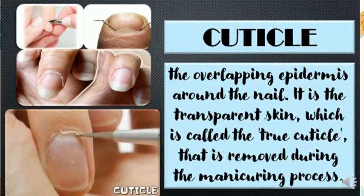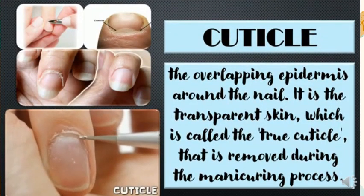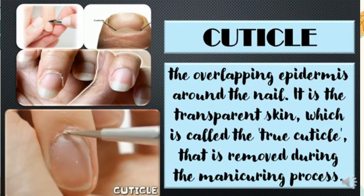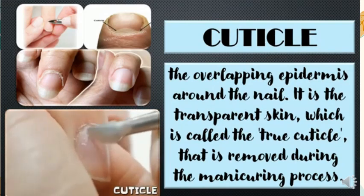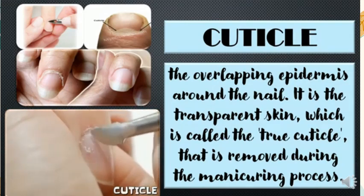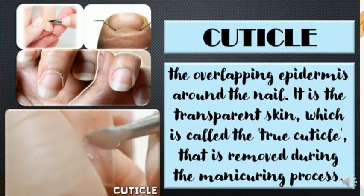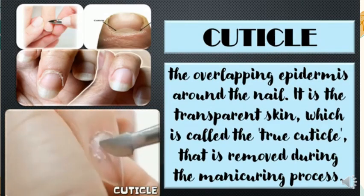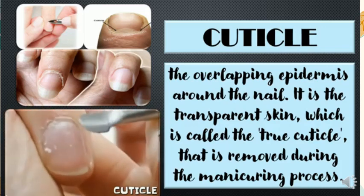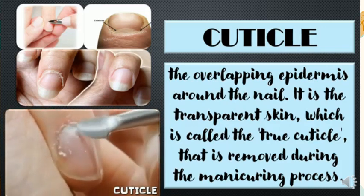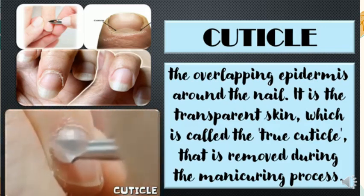Cuticle — the overlapping epidermis around the nail. It is the transparent skin, which is called the true cuticle, that is removed during the manicuring process.